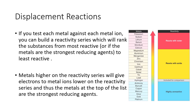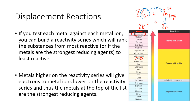The strongest reducing agents are potassium, sodium, lithium at the top. For example, if you have potassium metal added to zinc ions, the potassium has the ability to force the zinc ions to take its electrons, turning the zinc into solid metal and the potassium into ions. The potassium forces its electrons onto the zinc, making it turn into zinc solid, and then the potassium gets to be in ionic form, which it wants to be in.